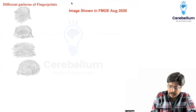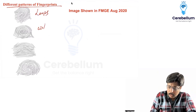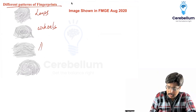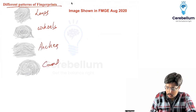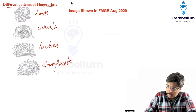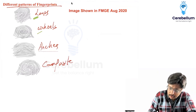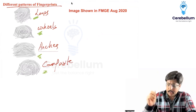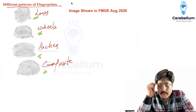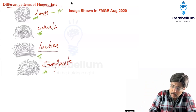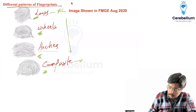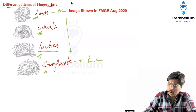Please remember the different patterns of fingerprints: Loops, Whorls, Arches, and Composite. Use the mnemonic: Love, Wife, And Children — L for Loops, W for Whorls, A for Arches, C for Composite. Loops is the most common, followed by Whorls, then Arches. Composite is the least common.